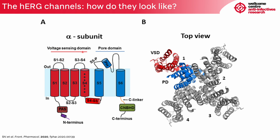From the voltage sensing domain, the most relevant would be S4, represented here with many positive symbols, because the S4 segment is the part of the protein that senses voltage changes in the membrane and causes a conformational change in the pore domain — meaning this is the part of the subunit that causes the HERG channel to be either open or closed.